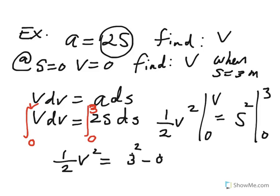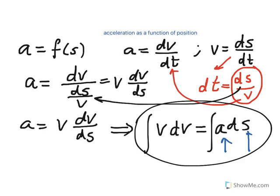So one half v squared, after you evaluate it between zero to v, you get just that. And this guy, when we evaluate this, we get three squared minus zero squared. So v squared actually becomes 18. Therefore velocity is going to be roughly about 4.24 meters per second. So anytime acceleration is a function of position, you need to use this expression v dv equals a ds and then integrate it.